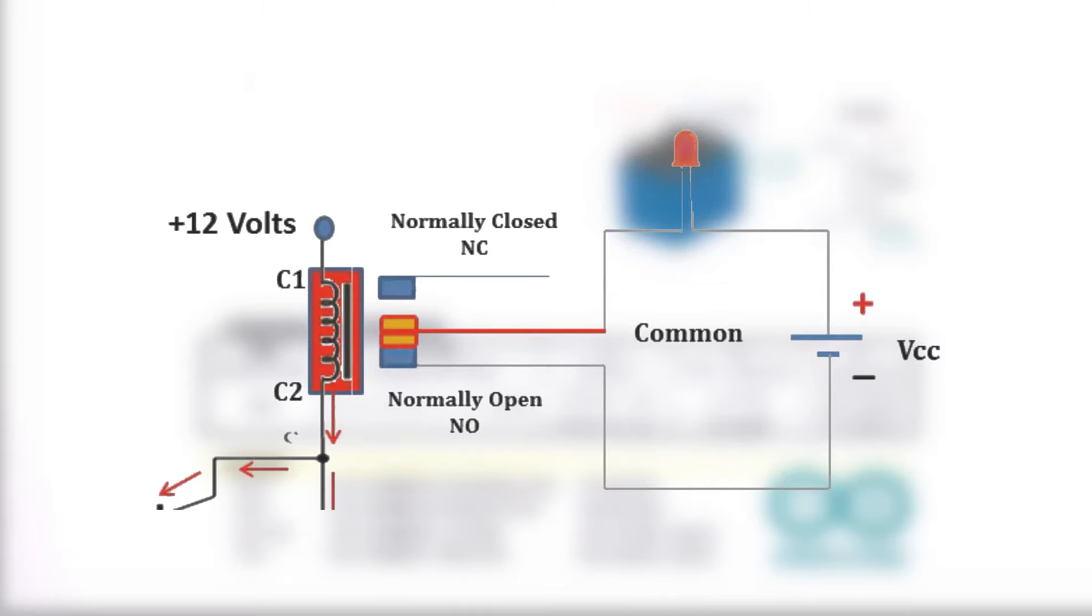When the coil is de-energized, the electromagnetic force disappears and the armature moves back to the original position, turning on the normally closed contact. The closing and releasing of the contact results in powering on and off the circuit.